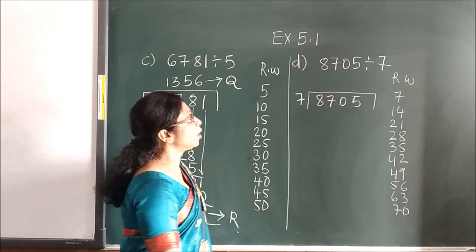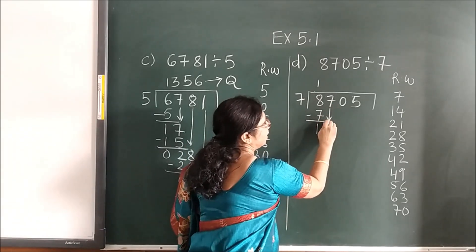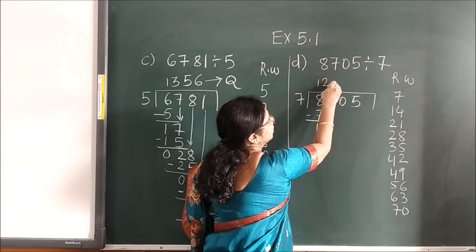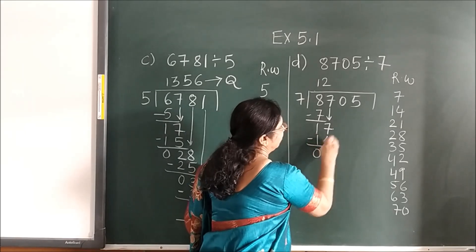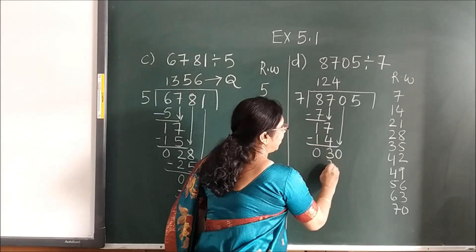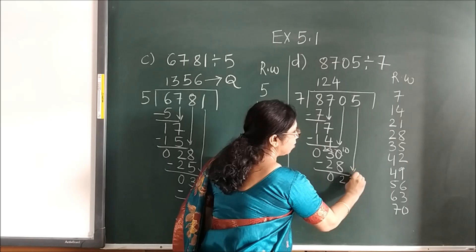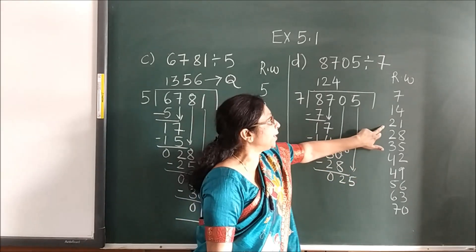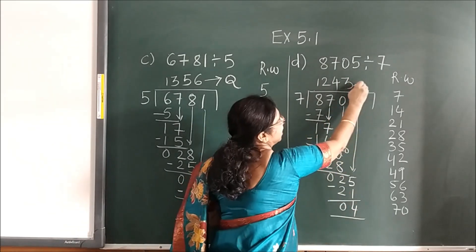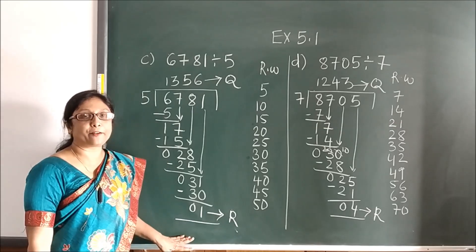Now we will move to the next sum. 7 ones are 7, subtract, you get the answer 1. Bring the next number down — 17. Less than 17: 7 twos are 14. Subtract, bring the next number down — 30. Less than 30 is 28: 7 fours are 28. Subtract, you get 2. Bring the next number down. Less than 25 is 21, so 7 threes are 21. Subtract and you get the answer. This is your quotient and this is your remainder. In this way you can solve quotient and remainder sums.